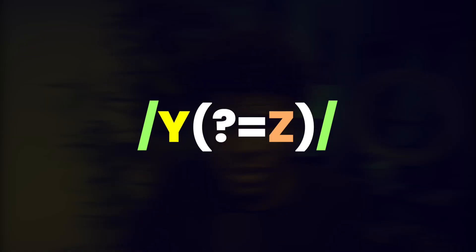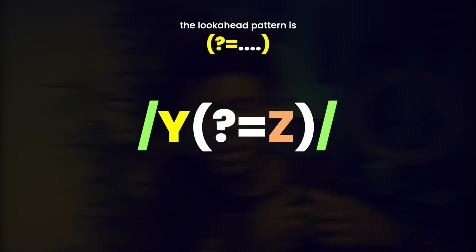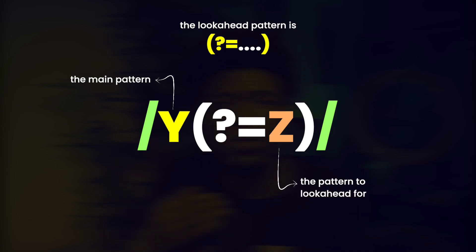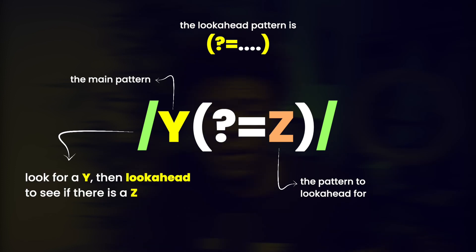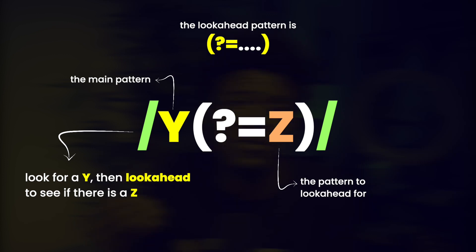The syntax of the look ahead pattern is: Y(?=Z). Y represents the pattern you are looking for, and Z represents what you look ahead for. You're telling the regex engine: look for Y, and after finding Y, look ahead to see if there is a Z. If there is a Z, Y is valid. If there is no Z, Y is not valid. The question mark and equal sign inside the parentheses tell the regex engine this is a look ahead pattern — without them, you'd be creating a capturing group.